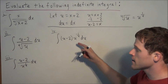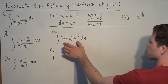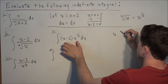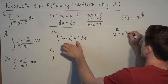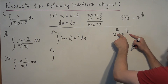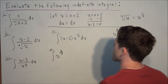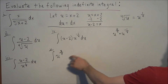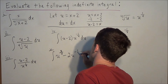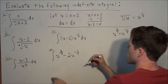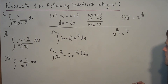Now we can distribute u to the negative one-fourth. For the first term, u times u to the negative one-fourth: since u is u to the first, or u to the four-fourths, we add exponents: four-fourths plus negative one-fourth equals three-fourths. So the first piece is u to the three-fourths. The second piece is minus 2u to the negative one-fourth, from multiplying negative 2 by u to the negative one-fourth. We always write du at the end.